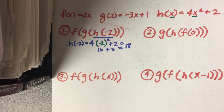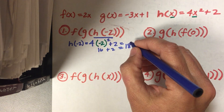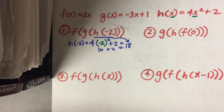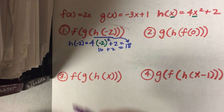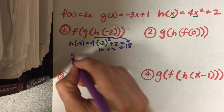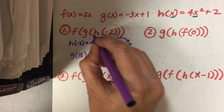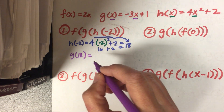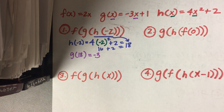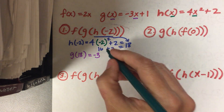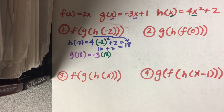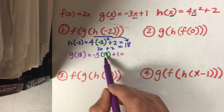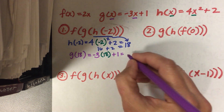So that's our first result. Now we're going to take this 18 — that's h of negative 2 — and that's going to become my input for g. g of 18 is going to equal negative 3 times 18 plus 1. So I've got negative 3 times 18, which is negative 54, plus 1, which is negative 53.